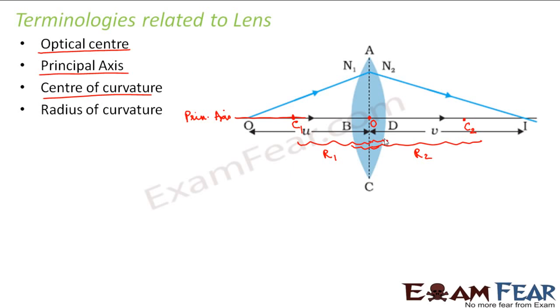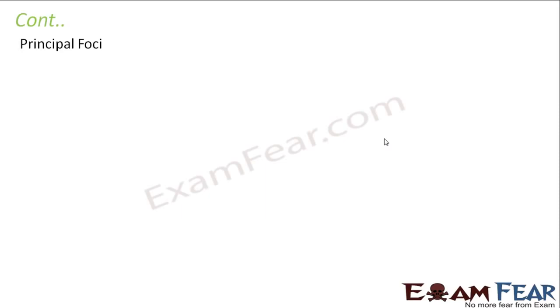The next terminology is the principal focus. You already know that the principal focus is the point where rays of light parallel to the principal axis either meet after reflection or appear to meet after reflection. In case of a lens, since there are two spherical surfaces, there should also be two principal foci — F1 and F2 — just as we had two radii of curvature R1 and R2.